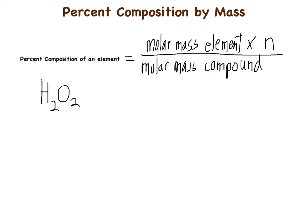In this equation, the molar mass of an element — as discussed in a previous video — is just the atomic mass you look up in the periodic table. The molar mass of the compound — also from a previous video — is the sum of all the atomic masses of every element in the compound.